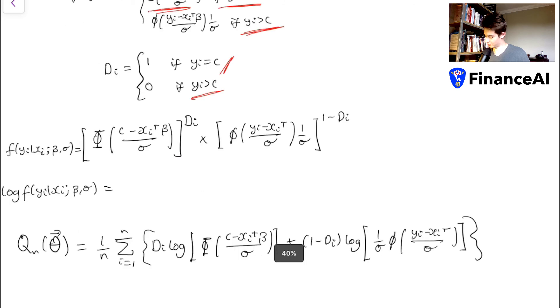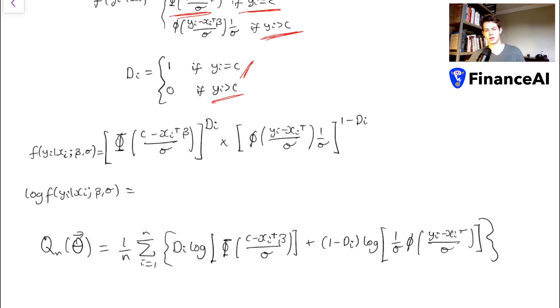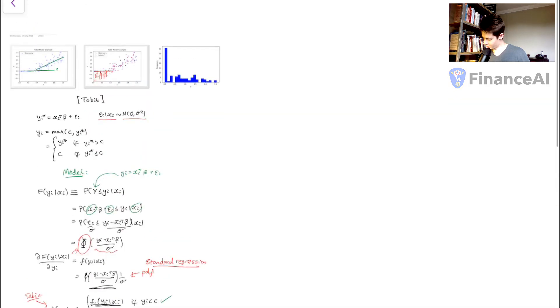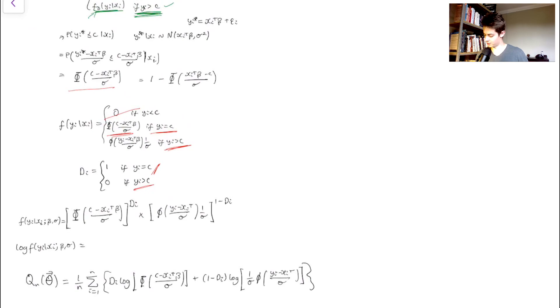That's the entire average log-likelihood function, which we'll use to optimize the parameters beta and sigma. This will be applied to our dataset for predicting dividends, but it can be used in numerous other settings. I might also make a video showing why a normal OLS model is biased here, and covering advanced topics like consistency and asymptotic behavior — but for now this is all you need. In summary, it's quite a straightforward proof with some neat tricks like splitting the function up and using the dummy variable.